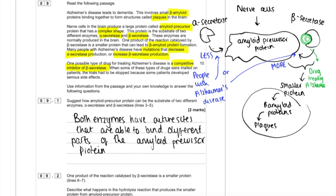So the first part: suggest how amyloid precursor protein can be the substrate of two different enzymes, alpha and beta secretase. This is testing your knowledge of enzyme action, but also requiring you to have read the passage properly. If you've read the passage, you'll see I've highlighted complex shape and this is really important.